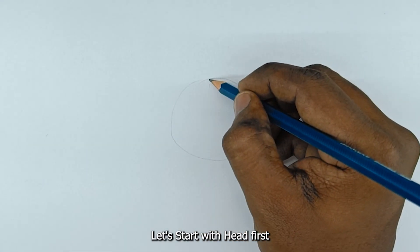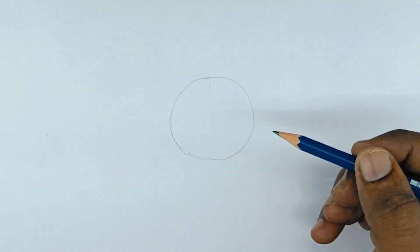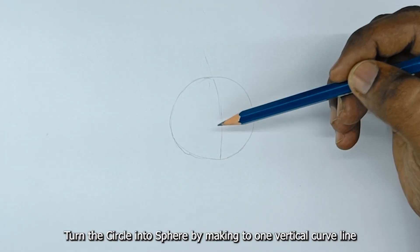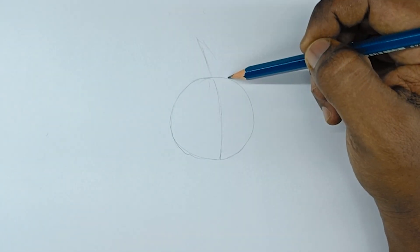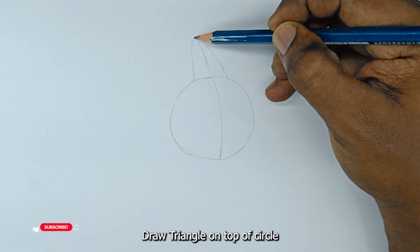Let's start with the head first. Draw a circle. Turn the circle into a sphere by making two vertical curve lines. Draw a triangle on top of the circle.